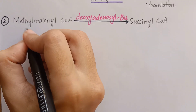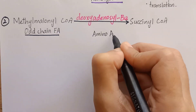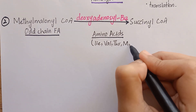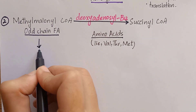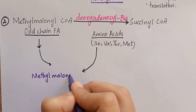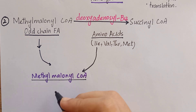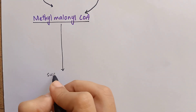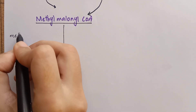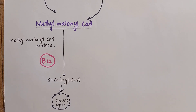The second reaction involves the degradation of odd-chain fatty acids and certain amino acids like isoleucine, valine, threonine, and methionine, which produce the compound methylmalonyl-CoA. Methylmalonyl-CoA is converted to succinyl-CoA by the enzyme methylmalonyl-CoA mutase. This reaction takes place in the presence of vitamin B12.